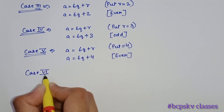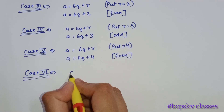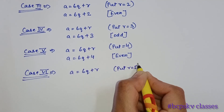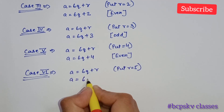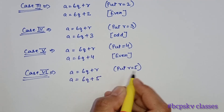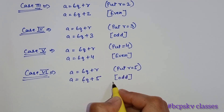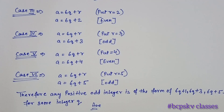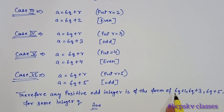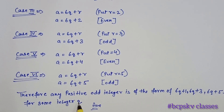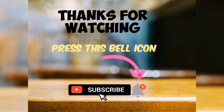This is the sixth and last case. Putting r equal to 5, we get a equal to 6q plus 5. Even plus odd gives an odd number. Therefore, any positive odd integer is of the form 6q plus 1, 6q plus 3, or 6q plus 5 for some integer q.